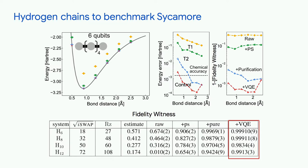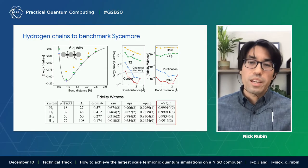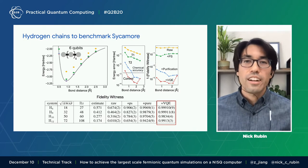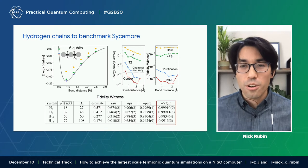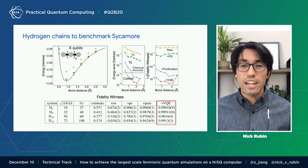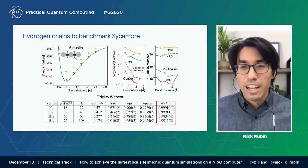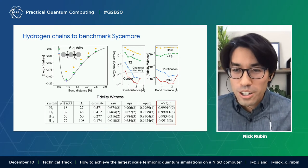And then finally, if we allow full variational optimization — performing the full VQE algorithm with layered error mitigation — we can achieve what is colloquially referred to as chemical accuracy. Chemical accuracy is this nice benchmark that tells us our simulation is matching what we could actually experimentally probe. And so at that point, your computation is providing what I deem useful computational work.